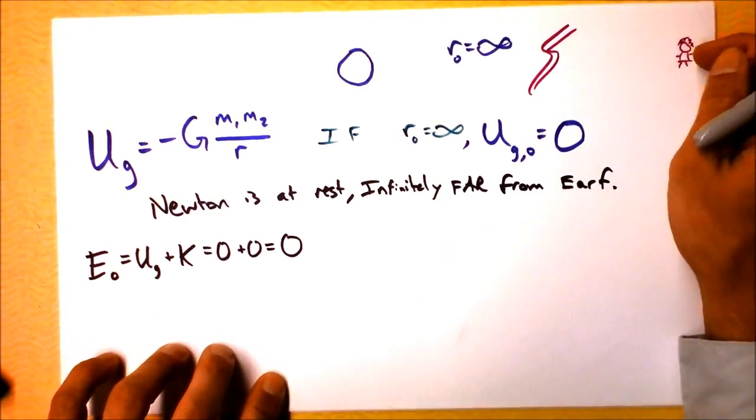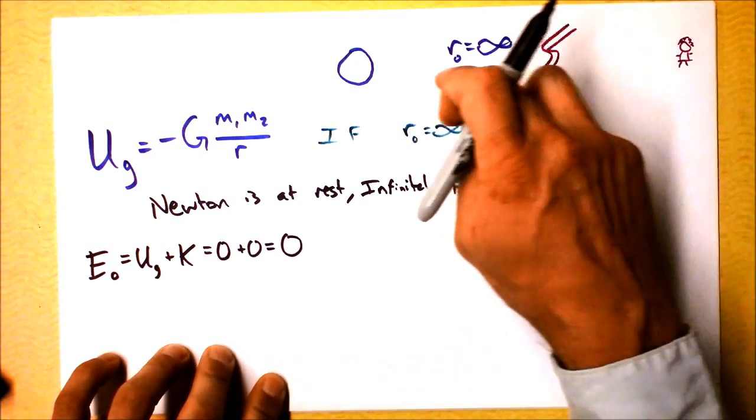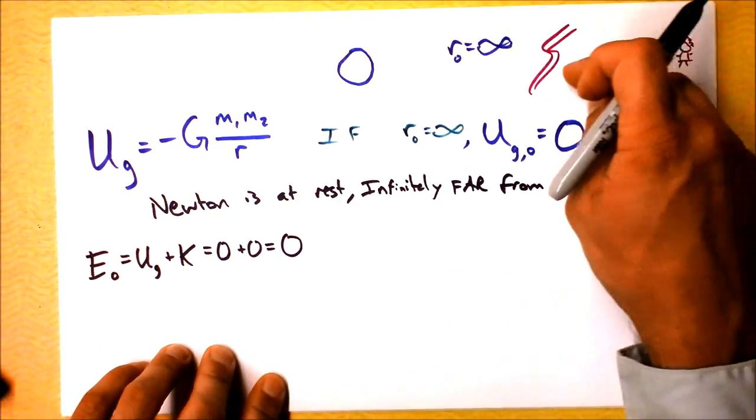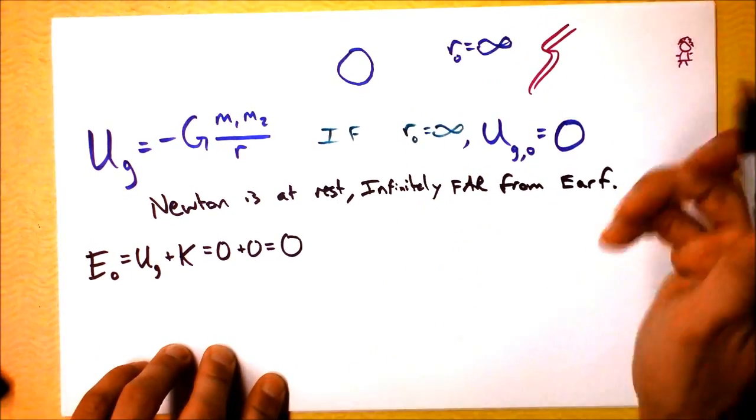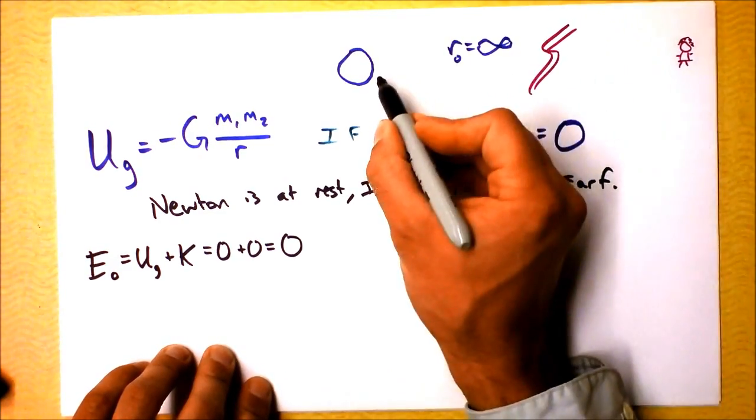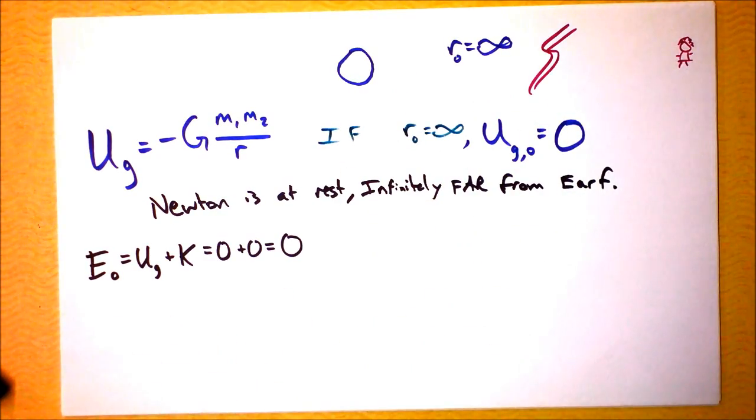But as Newton is given a nudge in this direction, he will accelerate towards the Earth. We know that the force of gravity will be doing work on Newton. That means Newton will be losing gravitational potential and gaining kinetic energy as he accelerates towards Earth.